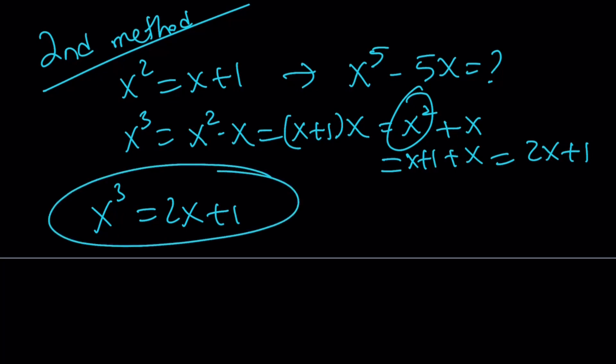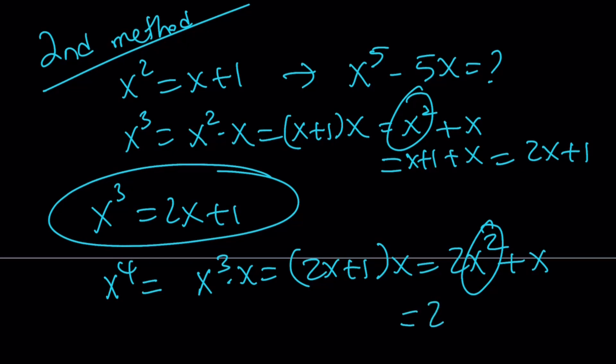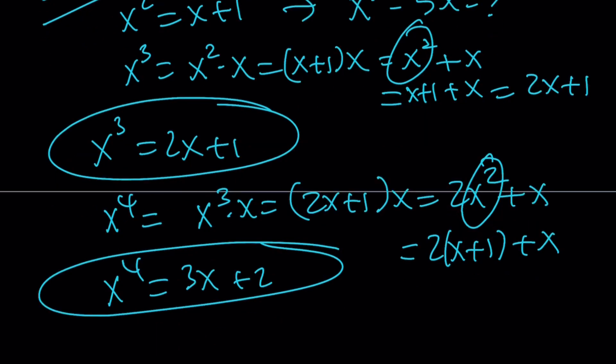Now let's go ahead and find out what x to the 4th power can be written as. x plus 1, x to the 4th, by the way, x to the 4th can be written as x cubed times x, which is 2x plus 1 times x, which is 2x squared plus x. Now x squared can be replaced with x plus 1. So we kind of keep doing it. That's what I meant by the polynomial method. And from here, we get x to the 4th equals 3x plus 2.